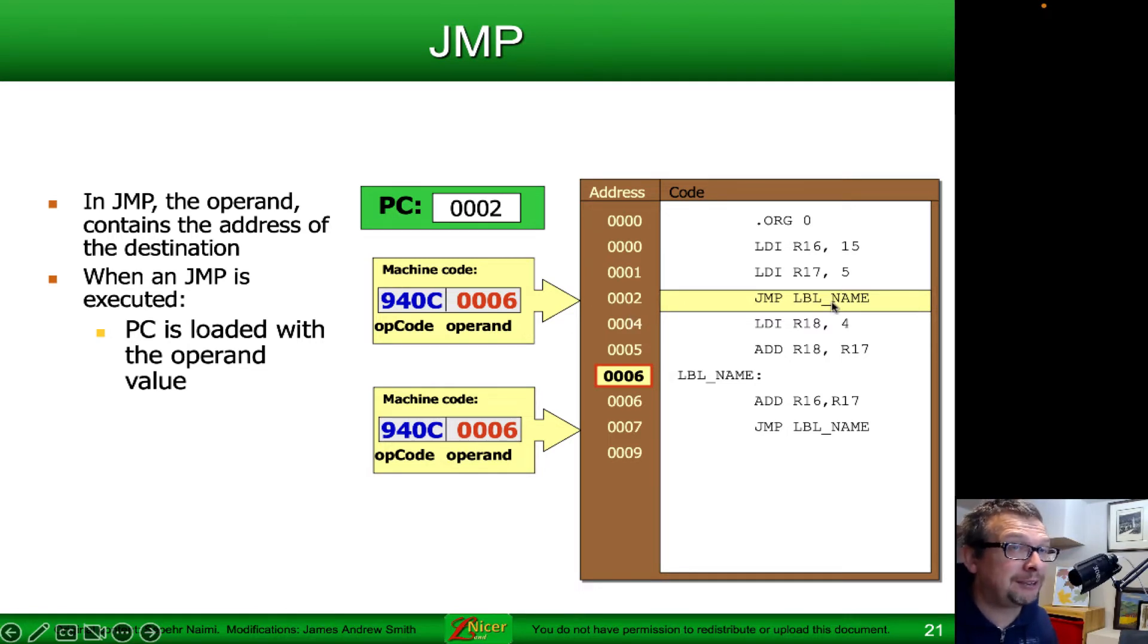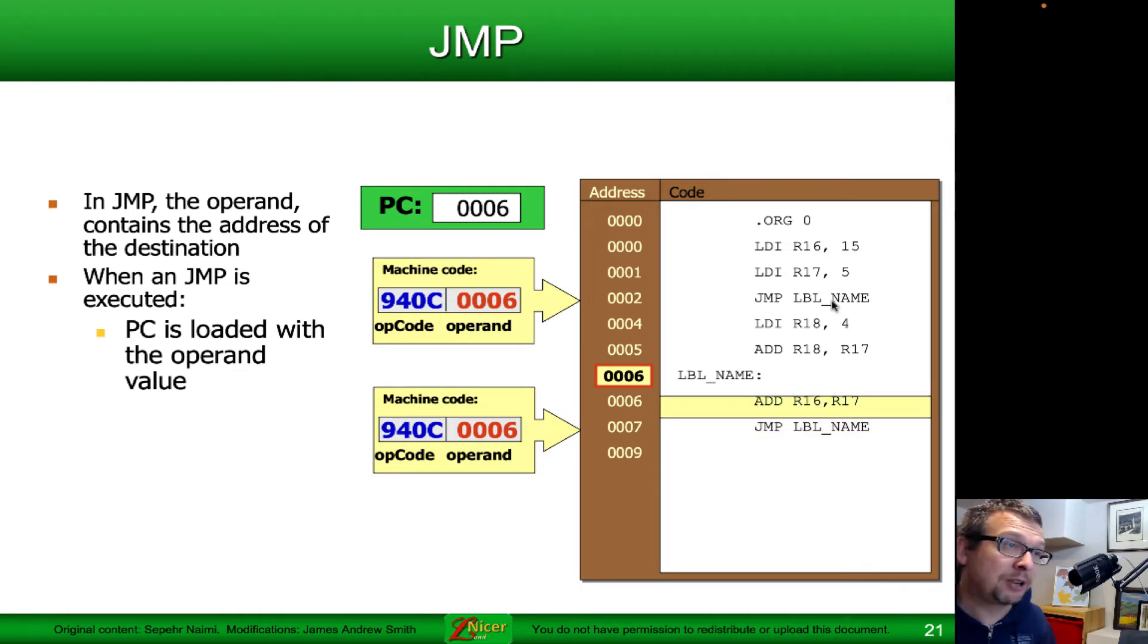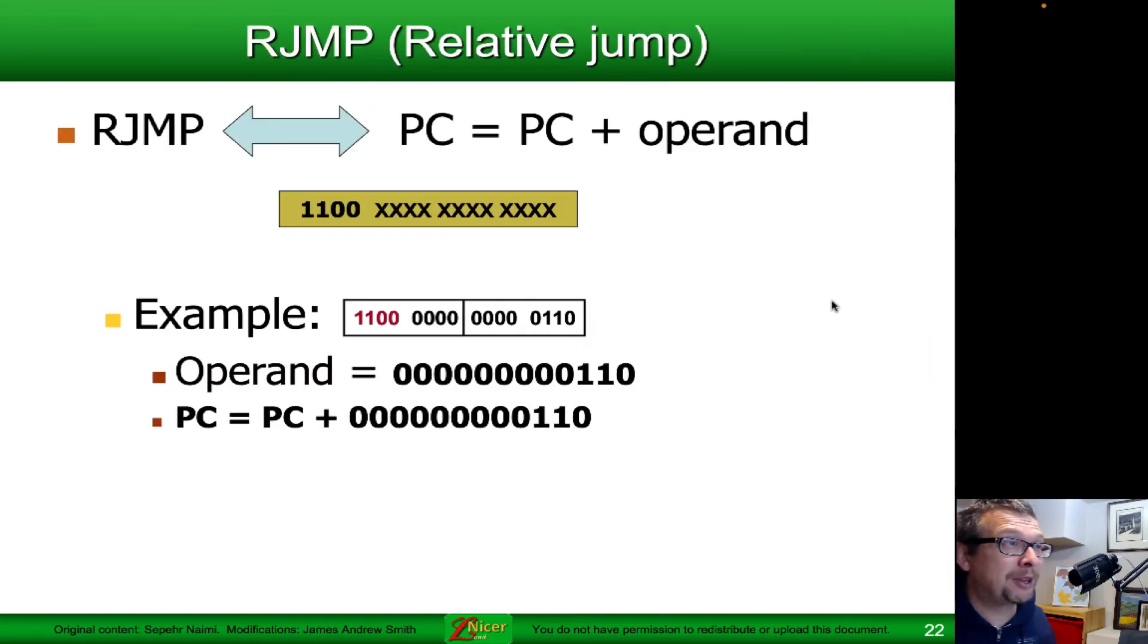Now we're at program counter value 2. We're in line 2 here, and it says I don't want to go to line 4, I want to go to a different line. Just so we're clear, the address here is 2, then there's an address of 4. Address 3 isn't there because the jump actually takes up 32 bits—two words. So we have here a jump that says 9406. That means jump, and then the 0006 is the operand, so we load the program counter with 6, and now the program continues at line 6.